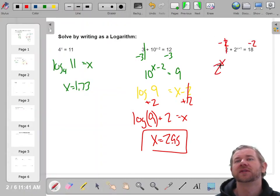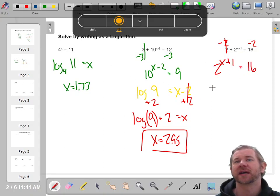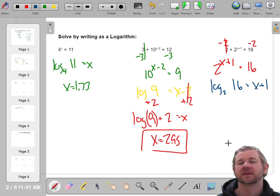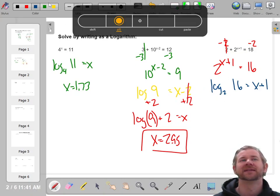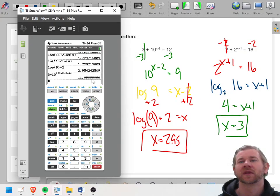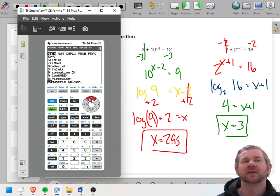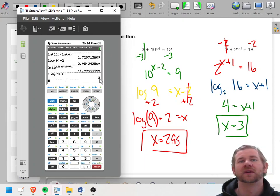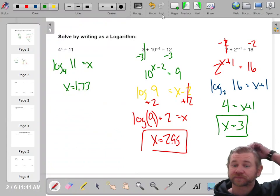Do another one. Isolate the exponent. 2 to the x plus 1 equals 16. Now it's a base 2 exponent, so write a base 2 log. 2 to the x plus 1 equals 16. Wait a minute. I know that. That's what we just did. 2 to the 4th is 16. So when I subtract 1 on both sides, I get 3. But you can type it in your calculator if you want. If you do the base 2 log of 16 and you subtract 1, you get 3. Cool.